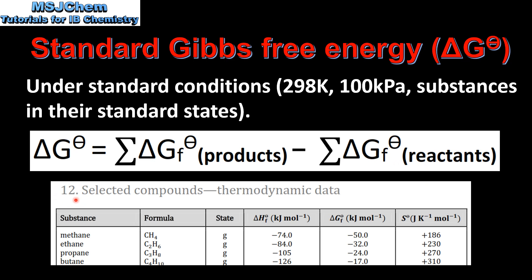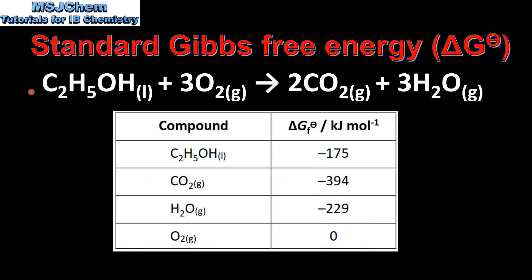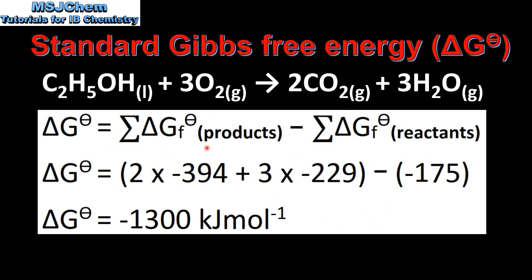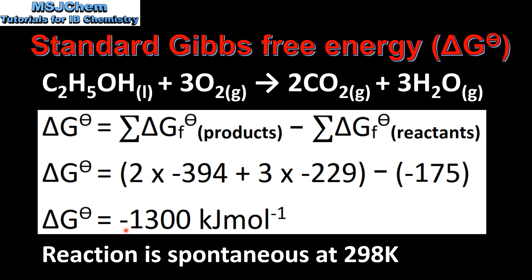In table 12 of the data booklet you can find standard Gibbs free energy of formation values. Next we'll calculate the standard Gibbs free energy change for this reaction. In this table we have the standard Gibbs free energy of formation values. As you can see, the value for oxygen, because it's an element, is zero. I input the values for the products multiplying by the coefficient in the balanced equation and I input the values for the reactants. Since oxygen is an element with a value of zero, it doesn't appear in the equation. That gives a standard Gibbs free energy change of negative 1300 kilojoules per mole. Because we have a negative sign for the delta G, the reaction is spontaneous at 298 K.